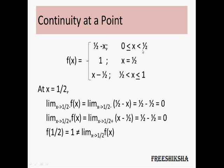For the left-hand limit, since x is less than 1/2 we consider the corresponding piece of the function, and it comes out to be 0. For the right-hand limit, since x is greater than 1/2 we consider that piece, and it also comes out to be 0. So the limits exist and the left-hand limit equals the right-hand limit — so far so good. But the value at x equal to 1/2 is 1, which is not equal to the limit. Therefore, the function at x equal to 1/2 is not continuous. This is the way you find continuity at a point.